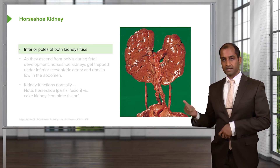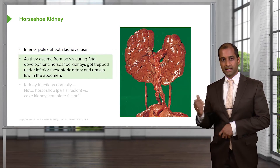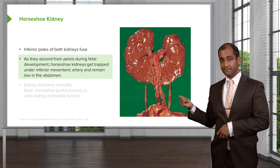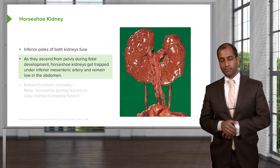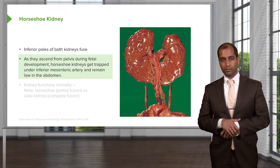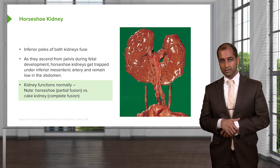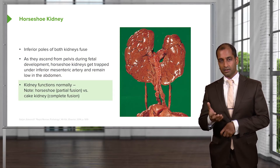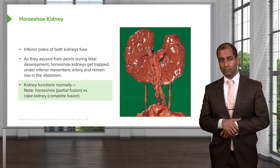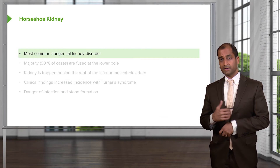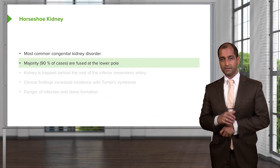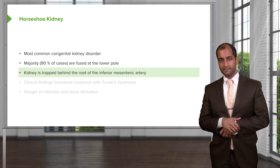This horseshoe kidney — the inferior poles have been fused. It gets trapped by the inferior mesenteric artery. You are prone to renal stones with horseshoe fusion as it may occur, and you might actually have normal functioning. Horseshoe kidney is the most common congenital kidney disorder. The majority of fusion will be taking place with the inferior poles, trapped behind by the inferior mesenteric artery.